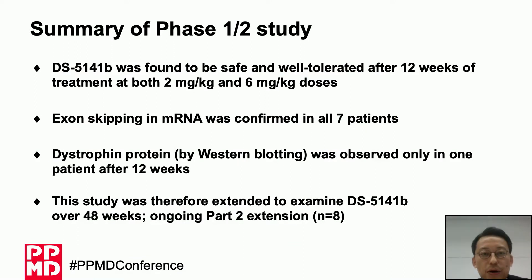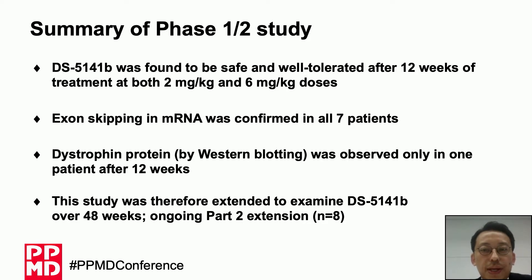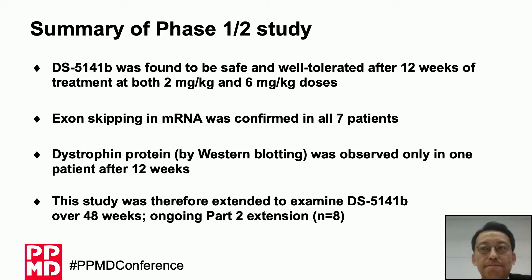Here is a summary of results. DS5141B was found to be safe and well tolerated after 12 weeks of treatment at both 2 and 6 mg per kilogram doses. The most frequent adverse event was injection site reaction, but all injection site reactions were mild with recovery by the next dose and no scarring — this did not result in any interruption to treatment or withdrawal from the study. Exon skipping in messenger RNA was confirmed in all seven patients, but dystrophin protein was observed in only one patient.